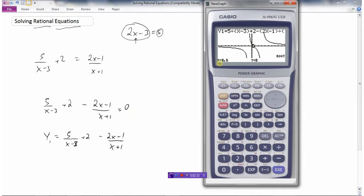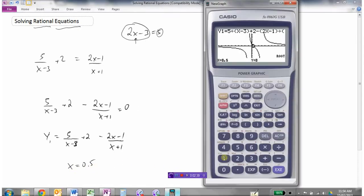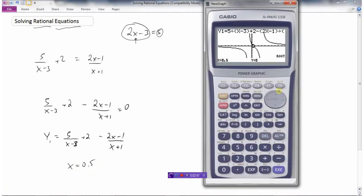So I hit root, and I will get an answer x equals 0.5. And there are no others. If I go to the right, it's not finding any, and if I go to the left, it's not finding any.